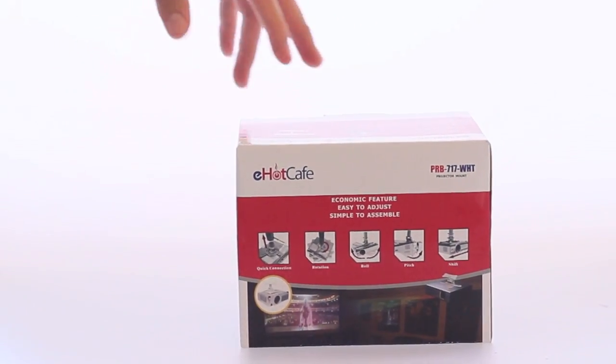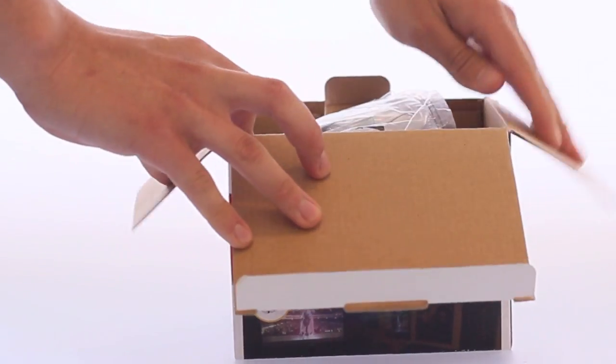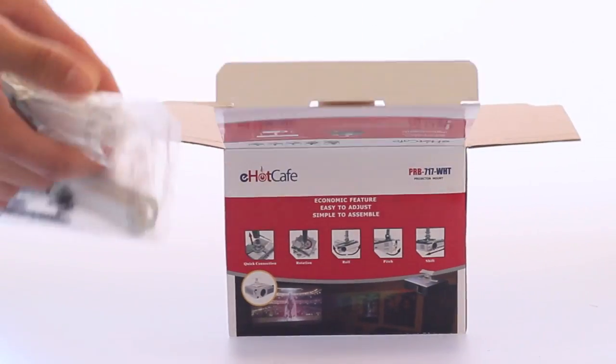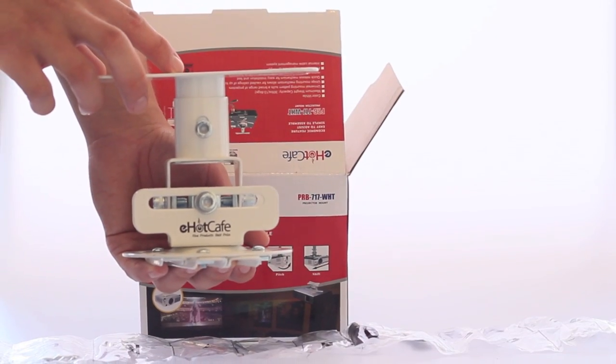This is the E-Hawk Cafe PRB 717 White. In the box we have all the tools we will need, and then we actually have the mount.